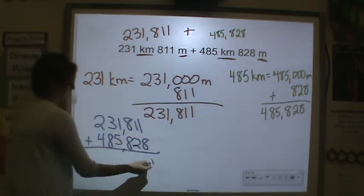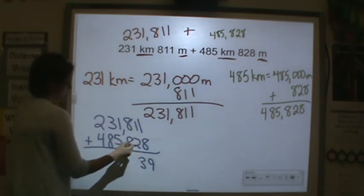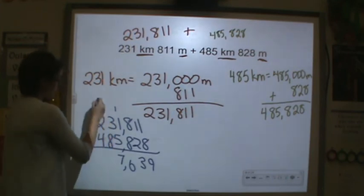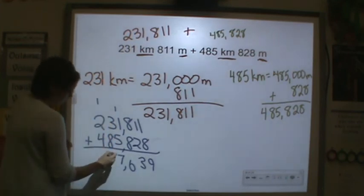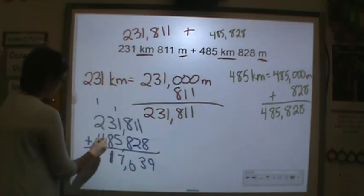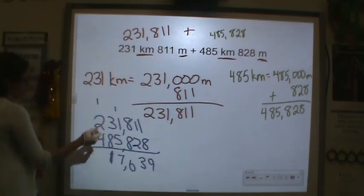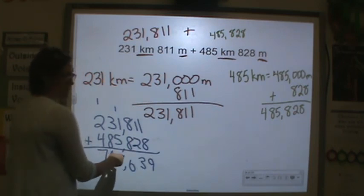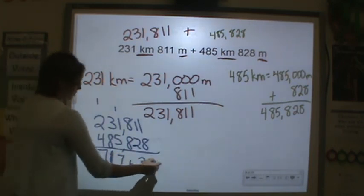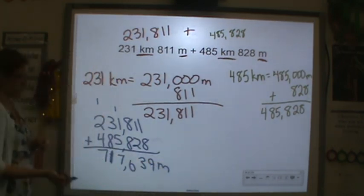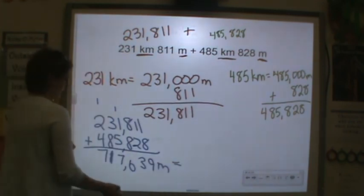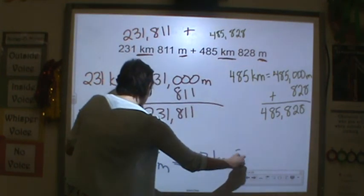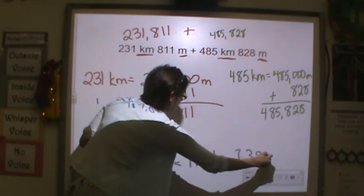Adding vertically: 231,000 + 811 plus 485,000 + 828. Working through: 8+1=9, 2+1=3, 8+8=16 carry 1, then 1+1=2... the final result is 717,639 meters, or equivalently 717 kilometers and 639 meters.